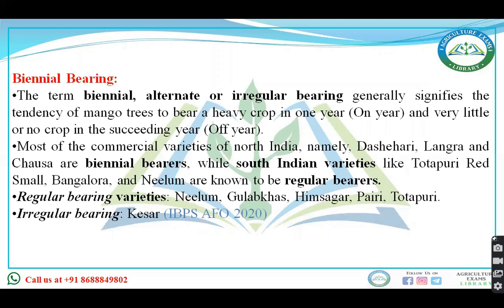Biennial, alternate, or irregular bearing means that in one year, mango is a heavy bearer crop, and in the succeeding year it produces very little crop — that is the off-year. Most commercial varieties of North India, like Daseri, Langra, and Chausa, are biennial bearers.